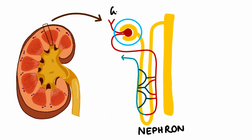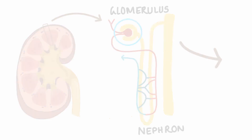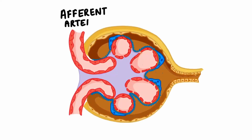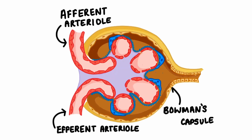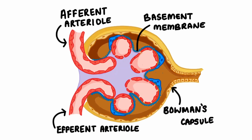The renal corpuscle is made up of the glomerulus, which includes the afferent arterioles, the efferent arterioles, and many glomerular capillaries, as well as the Bowman's capsule. Surrounding the glomerulus there is a basement membrane and a special structure known as a podocyte.